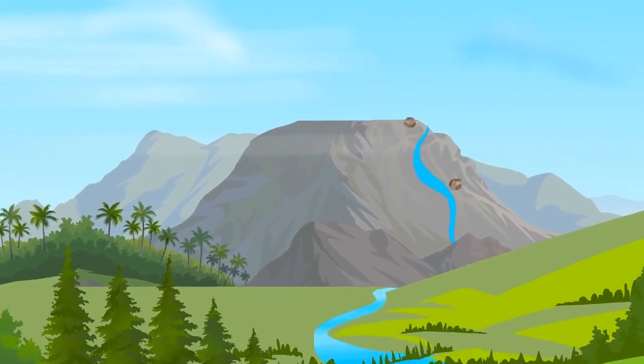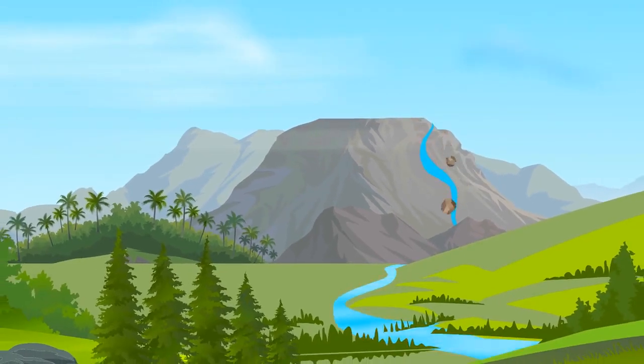Mountains become plateaus over time. Rivers erode mountains to form valleys and plains.